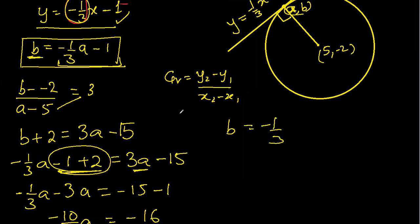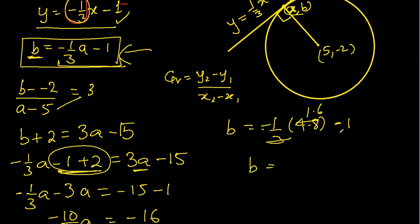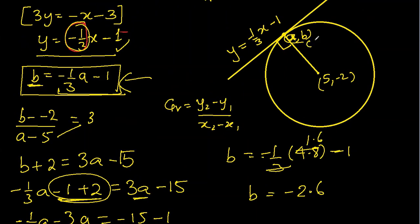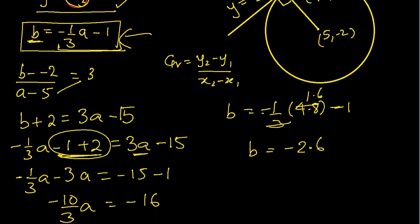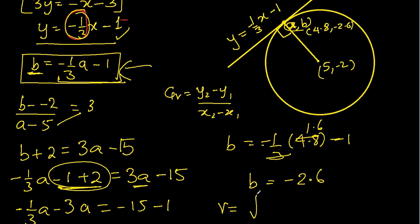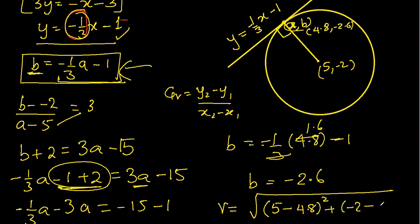Now finding b using b equal to minus one-third a minus 1 with a equal to 4.8: minus one-third times 4.8 gives minus 1.6, minus 1 gives b equal to minus 2.6. So both coordinates of the tangent point are 4.8 and minus 2.6. Now we can find the radius using the distance formula: r squared equal to x2 minus x1 all squared plus y2 minus y1 all squared.